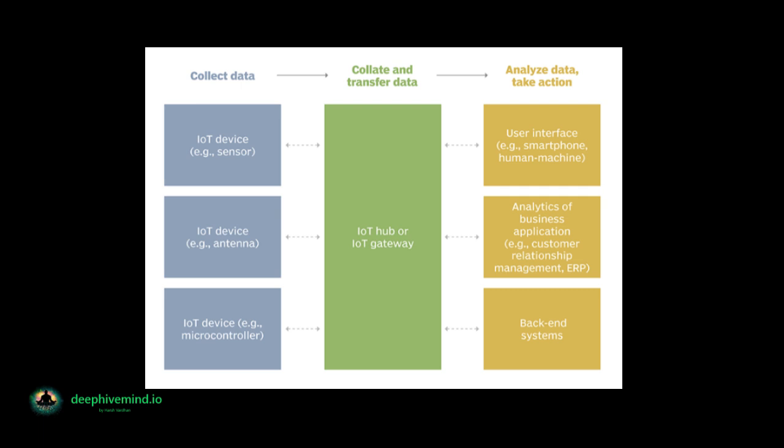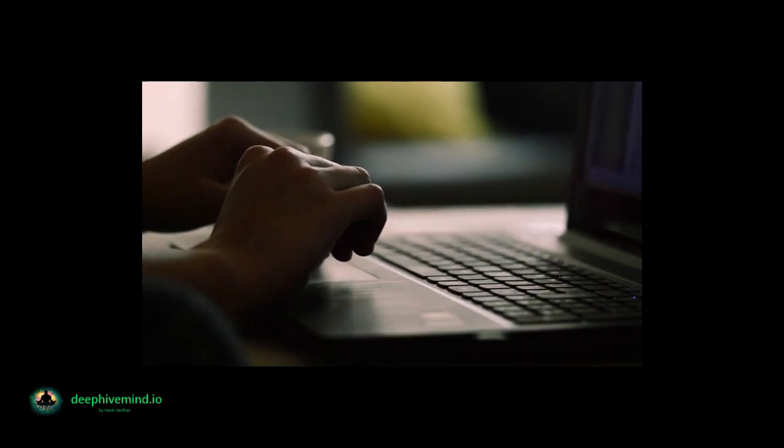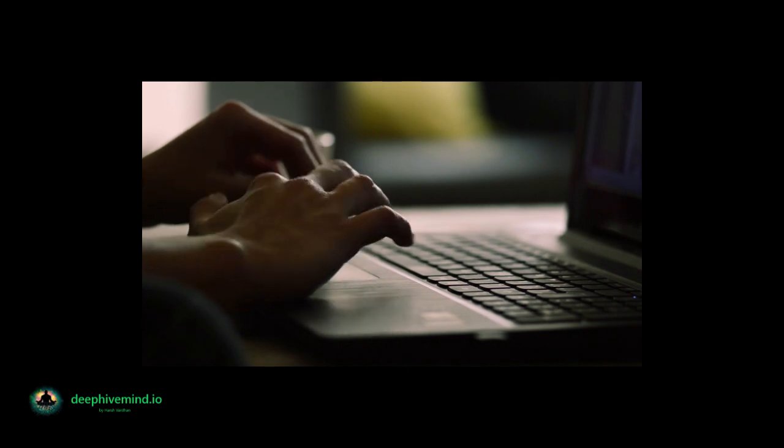IoT devices share the sensor data they collect by connecting to an IoT gateway or other edge device, where data is either sent to the cloud to be analyzed or analyzed locally. Sometimes these devices communicate with other related devices and act on information they get from one another. The devices do most of the work without human intervention, although people can interact with the devices to set them up, give instructions, or access the data.